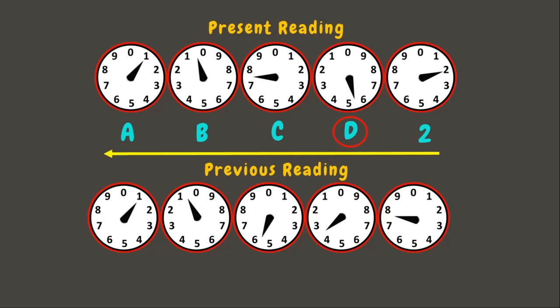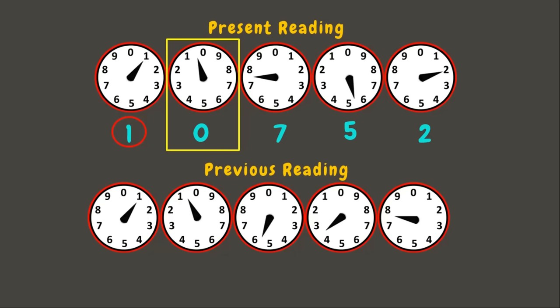In dial C the pointer appears between numbers, so we record 7 since it's smaller. In dial B the pointer points between 1 and 0, so the smaller number is 0. Lastly, in dial A the pointer points exactly at 1. We check the dial to its right — dial B — and since dial B has already passed zero, we record where the pointer exactly points, which is 1.